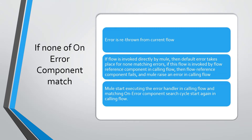If none of the On Error components match, then the error is re-thrown from the component. If this flow was invoked directly by Mule, then the application default error handler executes. If this flow is invoked by a Flow Reference component in a calling flow, then the Flow Reference component fails, Mule raises an error in the calling flow, and the matching On Error component search cycle starts again in the calling flow.